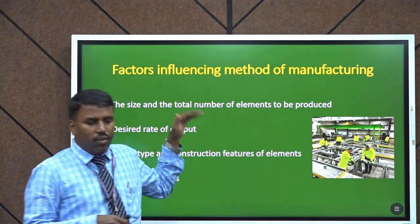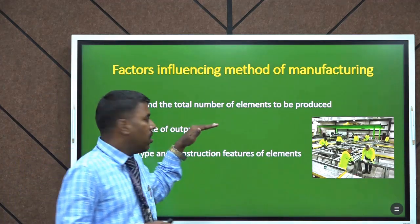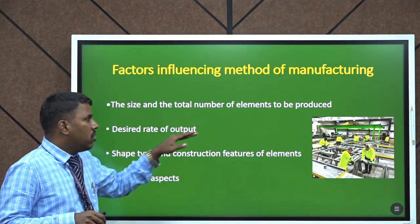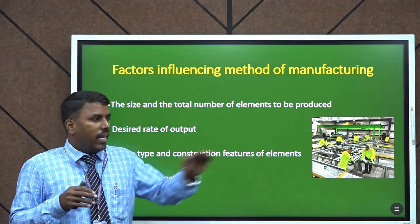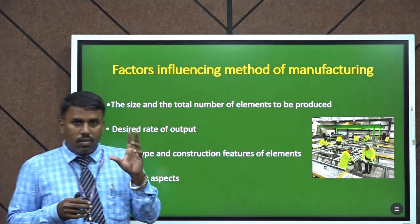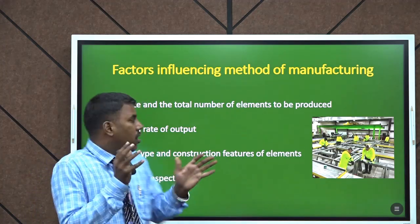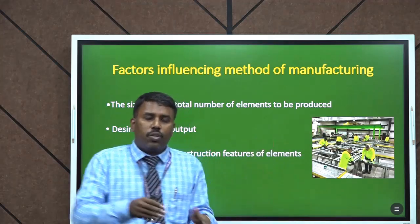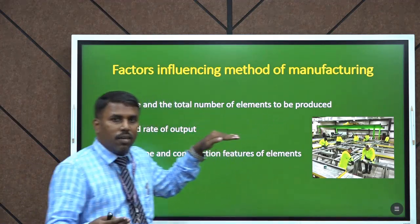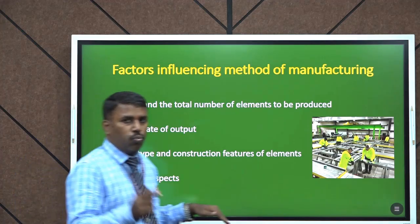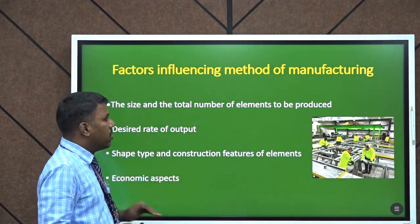These are the factors influencing the method of manufacturing of precast elements. The first one is the size and total number of elements to be produced. If you need very large-size elements, then we can prefer site prefabrication. A brick is also a precast material; it can be produced in a factory. The second factor is the desired rate of output — how much quantity and how many products we are expecting. Based on that, the method will be changed.